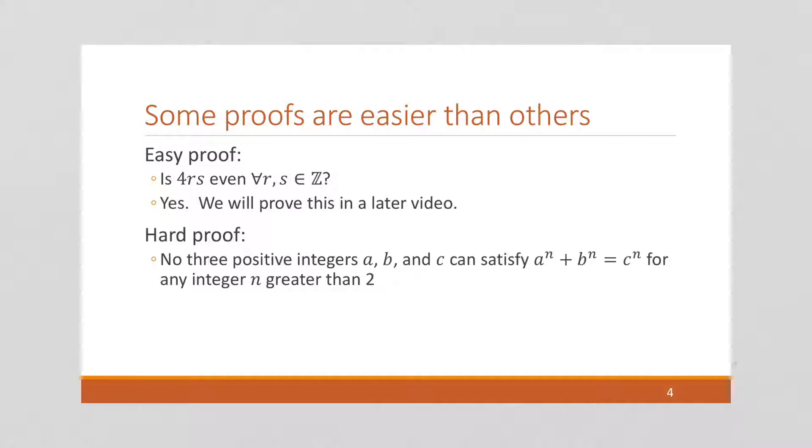Some proofs are easier than others. So this is an easy proof. We're going to do this later in a later video. We're going to prove that 4rs is even for any and all integers r and s. That's a fairly easy proof.